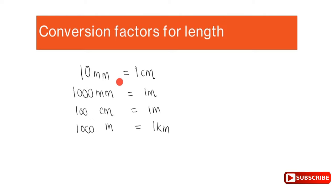10 millimeters equals 1 centimeter. 1000 millimeters equals 1 meter. 100 centimeters equals 1 meter. And 1000 meters equals 1 kilometer. Those are the four important conversion factors you need to memorize and know by heart when working with length.